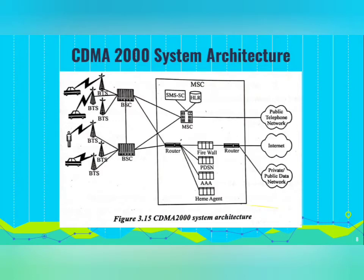The major functions performed by PDSN are: it establishes, maintains, and terminates point-to-point protocol sessions with the subscriber. It supports both simple and mobile IP packet services. And it routes packets to and from the external packet data networks.